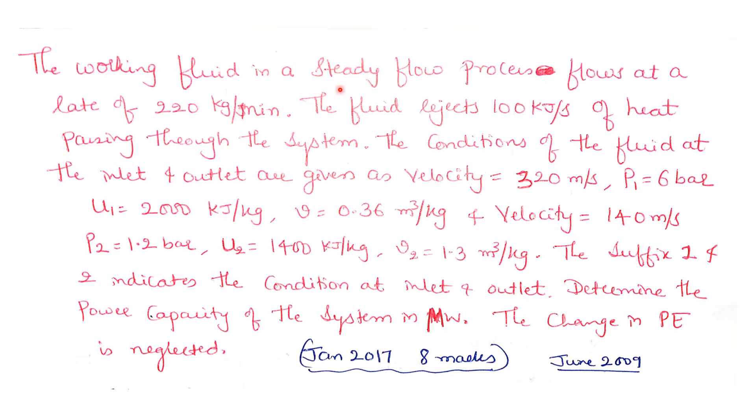The working fluid in a steady flow process flows at a rate of 220 kg per minute. The fluid rejects 100 kJ per second of heat passing through the system. The conditions of the fluid at the inlet and outlet are given as: velocity 320 m/s, pressure P1 is 6 bar, internal energy U1 is 2000 kJ/kg, specific volume 0.36 m³/kg, and velocity 140 m/s, pressure P2 is 1.2 bar, U2 is 1400 kJ/kg, specific volume 1.3 m³/kg.